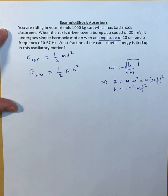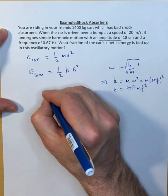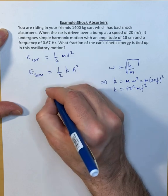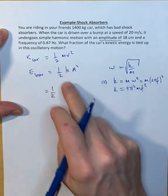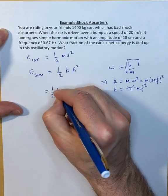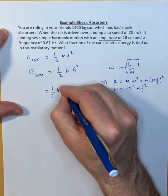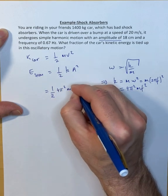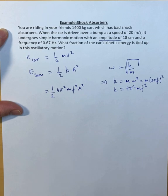That means that our energy in our simple harmonic motion of the car is one half, now we plug in this k, so 4 pi squared times m times f squared times a squared. That's our total energy.